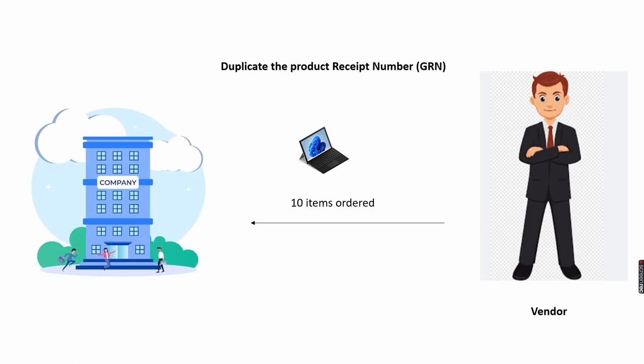In the third and final scenario, we will place a purchase order for 10 items. The vendor sends 5 items in the first truck with a delivery note, and later in the same day the second truck arrives with the remaining 5 items using the same delivery note. The shipment is done from the vendor side on the same day, so the product receipt number is the same. But in D365, when you try to enter the same number for both shipments the system gives an error for a duplicate receipt number. I will guide you through how to partially receive with the same delivery note in D365.